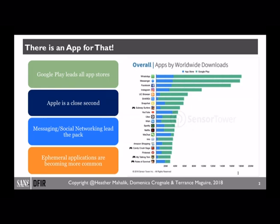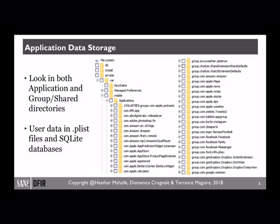So first, where is the data stored on the device? In this slide, we're looking at the file system on an iOS device — the internal storage of that device. Application data is going to be stored in multiple locations. The application is going to have its own directory, as well as shared directories on the file system. And depending on the permissions for that application, it may store data in other locations of the file system.